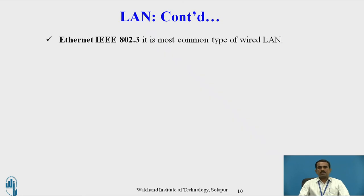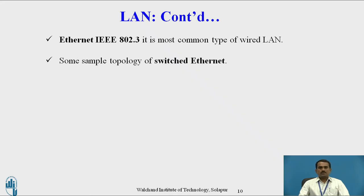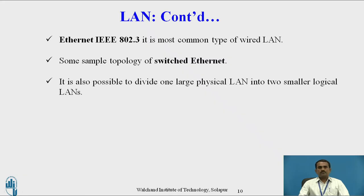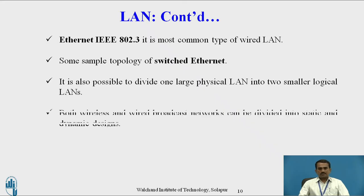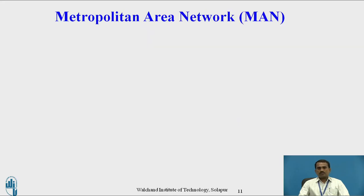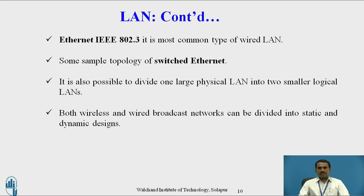Ethernet, that is IEEE 802.3, is the most common type of wired LAN. It is used in a LAN to provide connection. A sample topology of switched Ethernet is a marketplace standard. It is also possible to divide one large physical LAN into two smaller logical LANs. Both wireless and wired broadcast networks can be divided into static and dynamic designs.